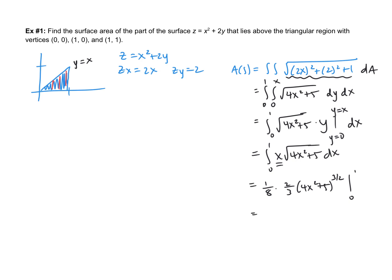And then if you trust me when I evaluate that, I have 1/12 multiplied by 27 - 5√5. In terms of what that means, if we take this triangular region and we map it up to this surface, and we would almost like to cut out the part that falls on this surface, this would be the area of that portion. Let's take a look at two more examples.